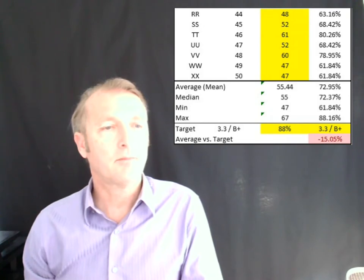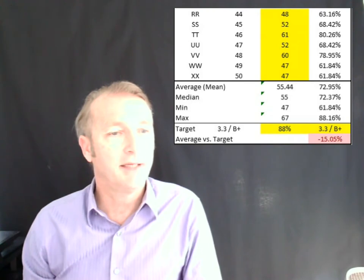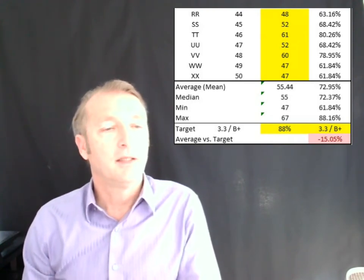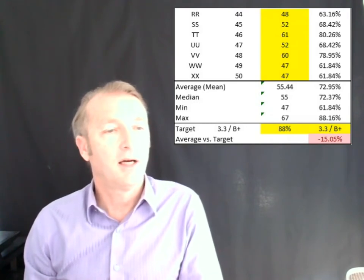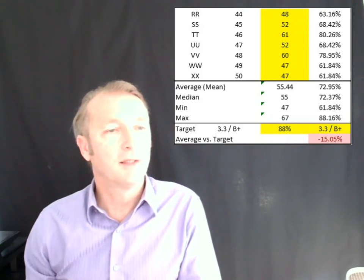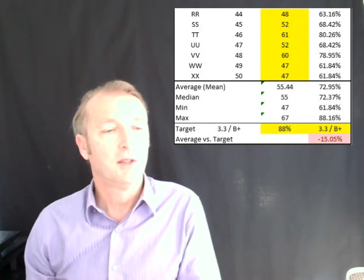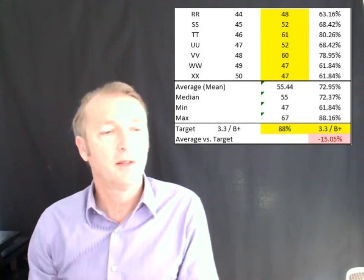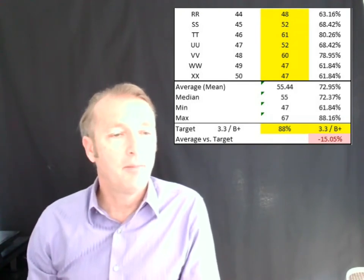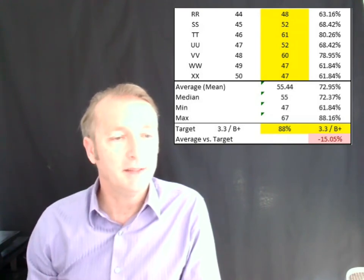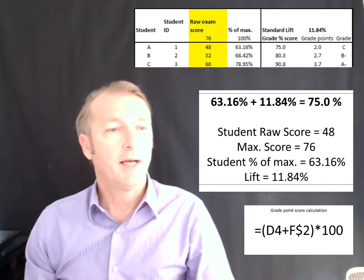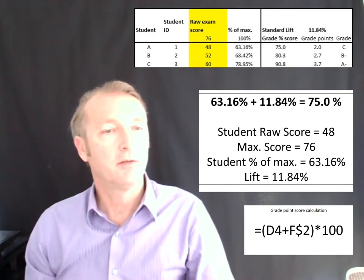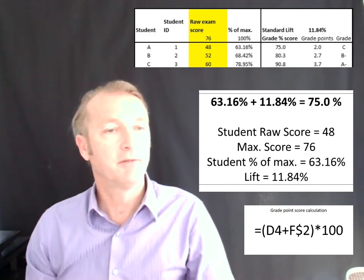So how do we do that? The standard way is to take your maximum score — in this case the maximum score in terms of percentage is 88.16. You could also look at the maximum raw score of 67 and move it up to 76, but I found it's much better to do it with the percentage scores. So the top scoring student is 88.16, and the distance from that to 100 is the lift we need to add to all students. We have the score of student A at 63.16, a lift of 11.84%, giving a lifted score of 75%.